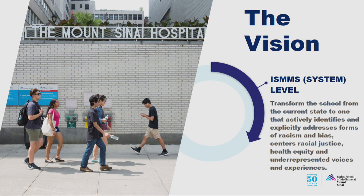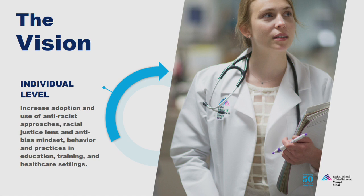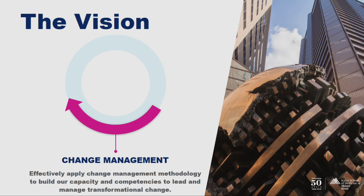At the school level, it's to transform the school from its current state to one that identifies and explicitly addresses forms of racism and bias, centers racial justice, health equity, and underrepresented voices and experiences. At the individual level, it means increased adoption of anti-racist approaches and racial justice lenses, anti-bias mindsets, behaviors, and practices in education, training, and health settings. It's important to have an individual vision related to the bigger system vision.